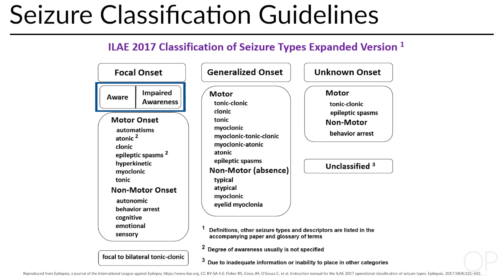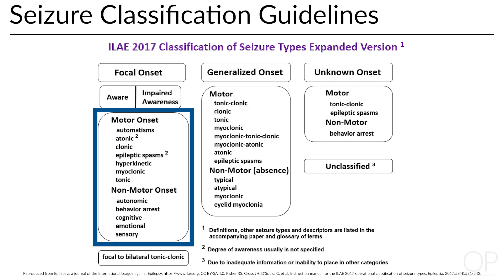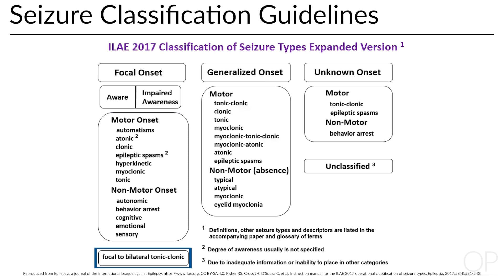Seizures can be further classified according to the patient's level of awareness, which can be preserved or impaired. To figure this out, you can ask whether the person seemed to know who they are and what is going on with their surroundings during the seizure. Awareness does not refer to awareness of the seizure occurring. Focal seizures can be further divided based on motor versus non-motor components.